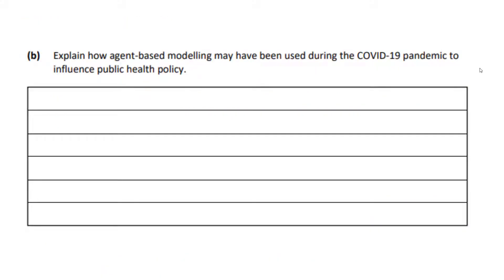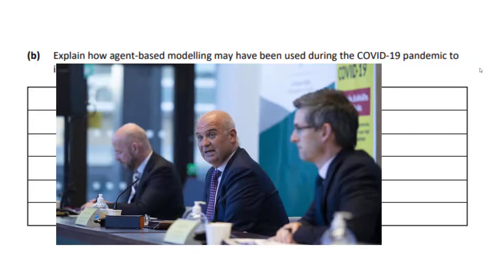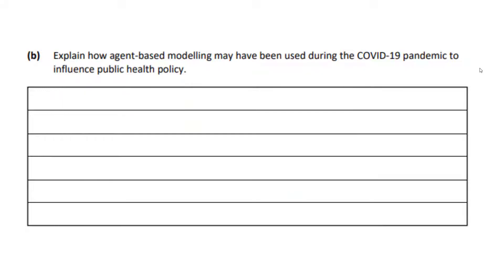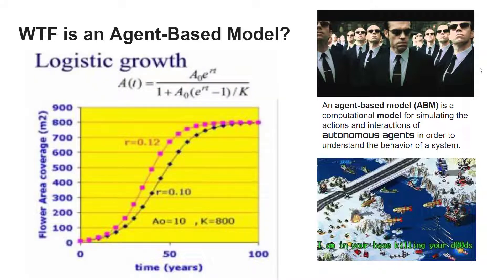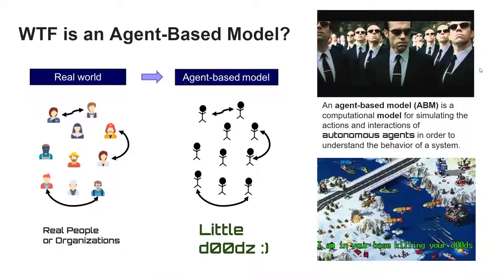Explain how agent-based modeling may have been used during the COVID-19 pandemic to influence public health policy. So what is it? Agent-based modeling is when you have a bunch of autonomous agents that simulate stuff. Before we had a graph extending into a projection - that's more of an analytical model using coordinate geometry and algebra. But with agent-based modeling, you can program imaginary robots to bump into each other and spread viruses. Please do not write 'little dudes' in an exam.